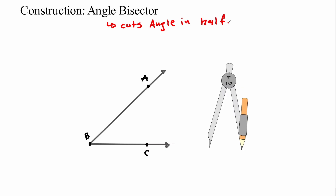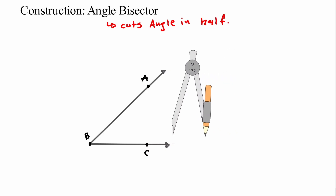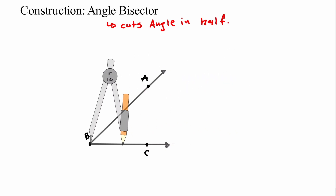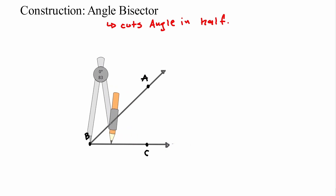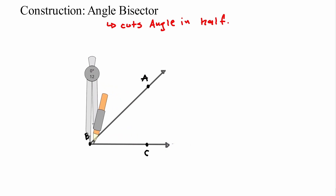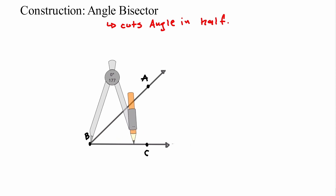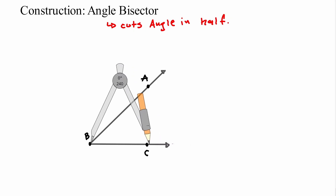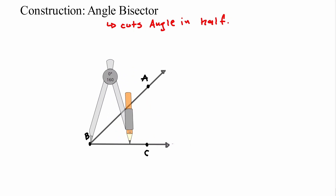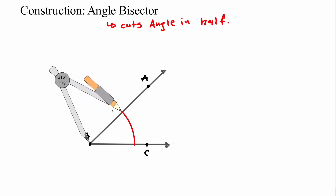First step: I'm going to get my compass, put the metal leg on vertex B, and create some arc. It doesn't really matter how far your pencil is away from the vertex — you just want some distance. You could have done it all the way over here or here. It doesn't really matter how far you are. I'm just going to create some arc. First step is done.